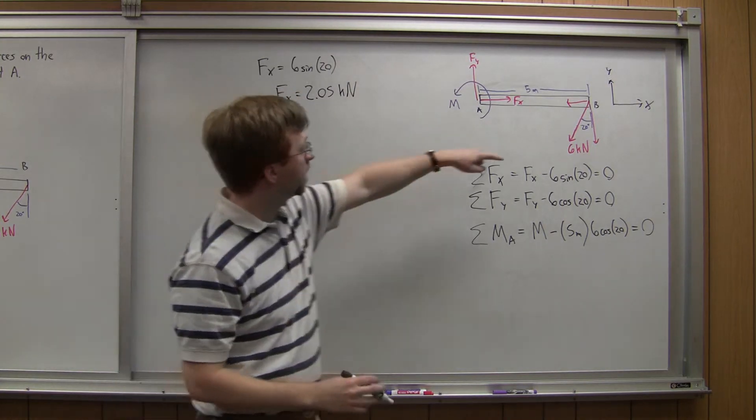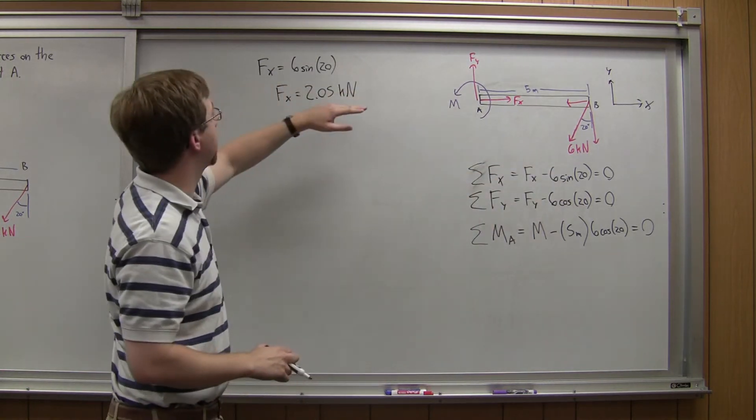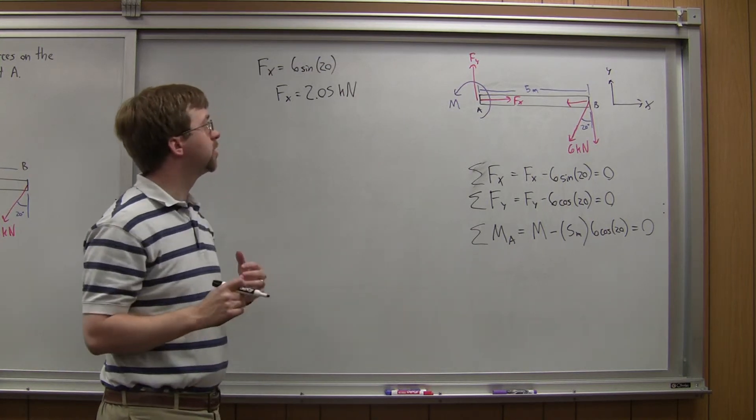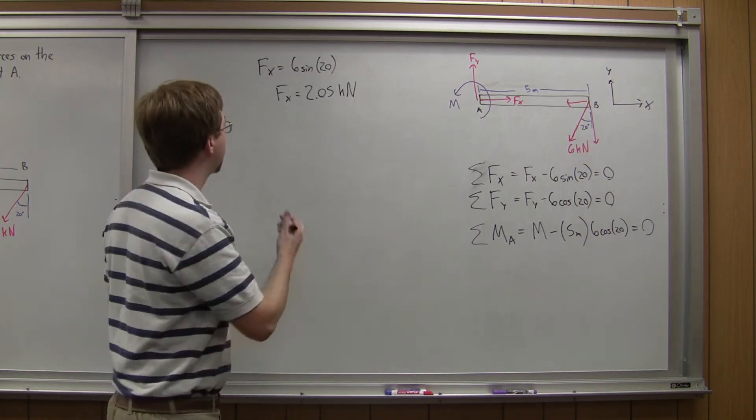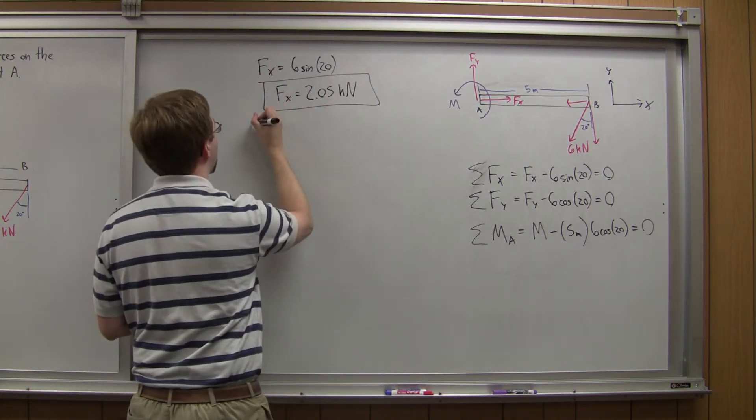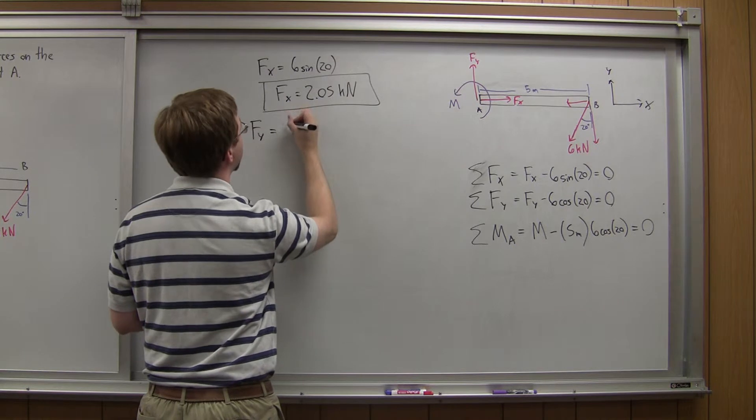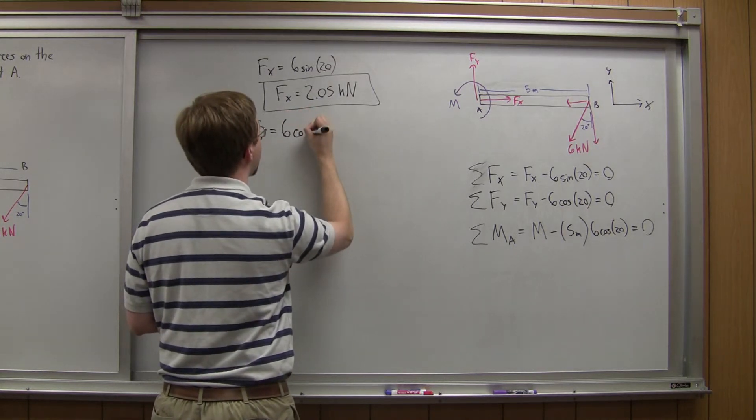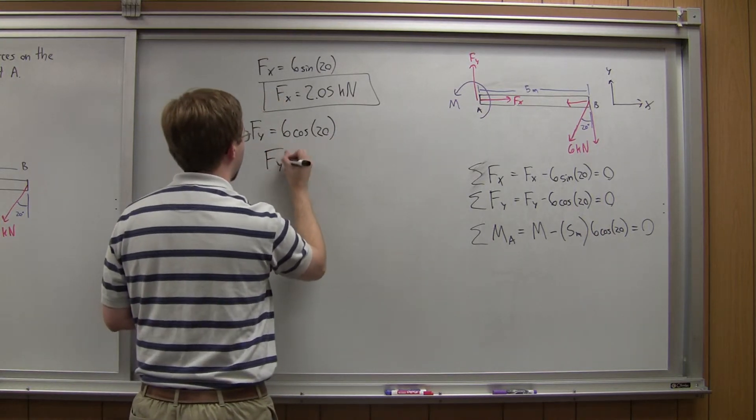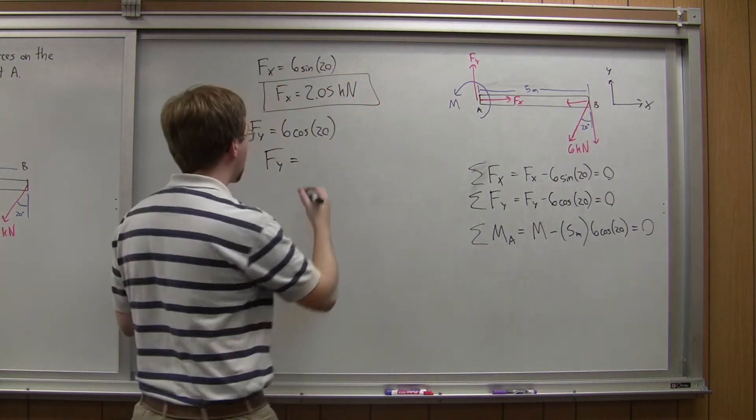Remember the units in the beginning, we had 6 kilonewtons here. So, I've got 2.05 kilonewtons, which I could really rewrite as 2,050 newtons of force. That's one reaction force I have here. Next, I move on to y. The force in the y is simply equal to 6 times the cosine of 20. That gives me an answer of Fy is 5.64 kilonewtons.